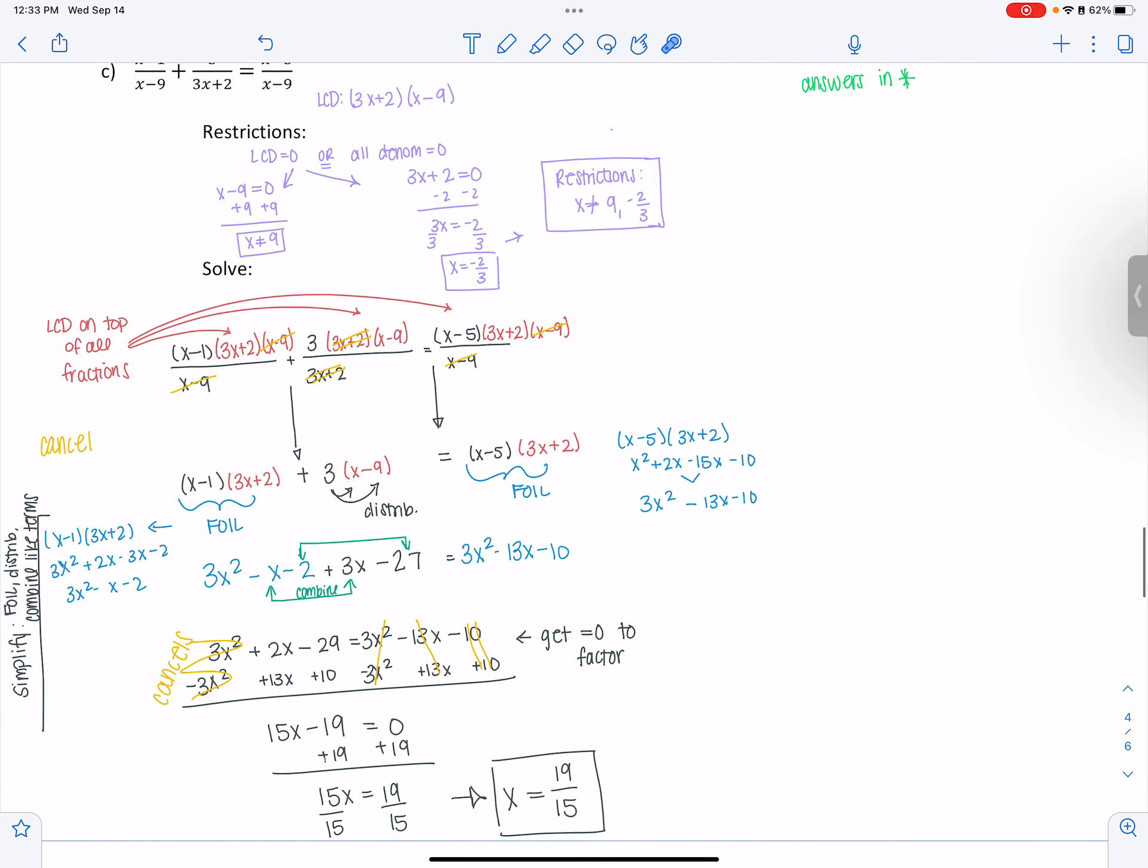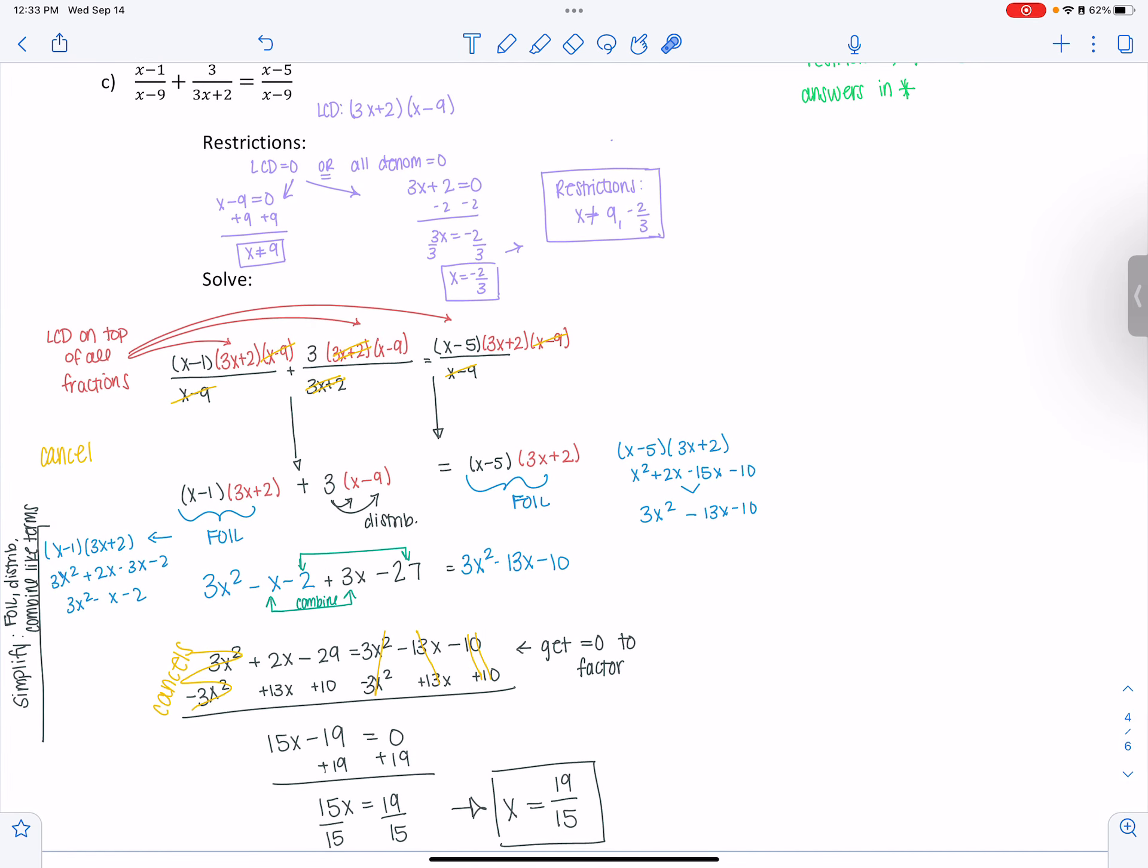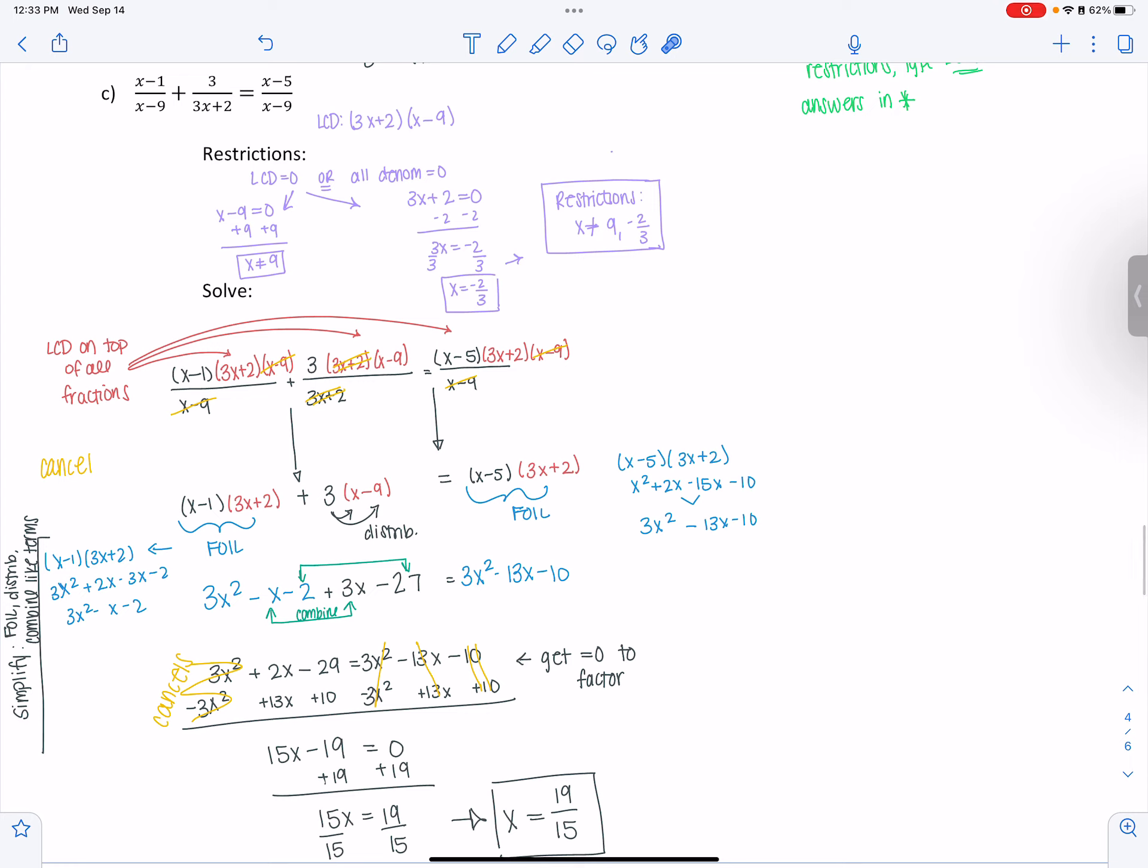And then the last one, this is a really great example because it covers a lot of stuff. This last one, I've got those restrictions, 9 and negative 2 over 3, and then I get a solution of 19 over 15. Leave these things as fractions. You don't need to write them as decimals, but do take a second, pause the video.